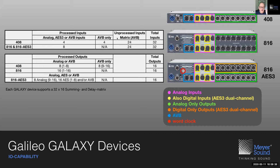Every Galaxy device has a total of 32 inputs, regardless of whether you buy a 408, an 816, or an 816 AES 3. The minority of those inputs are the physical inputs on the back of the device; the majority are AVB stream inputs. As for outputs, the 408 has eight analog physical outputs, but you can use 16 outputs in the matrix — some of those will be AVB. So there you have the base differences between these three models.